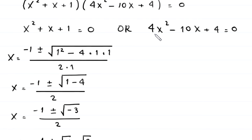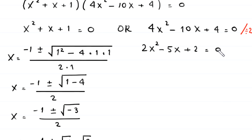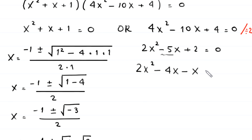Now we solve the second case: 4x² − 10x + 4 = 0. Dividing the whole equation by 2 gives 2x² − 5x + 2 = 0. This quadratic is factorable.